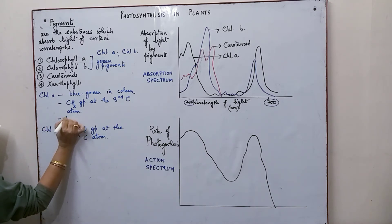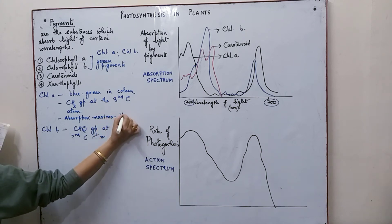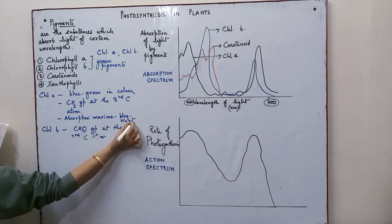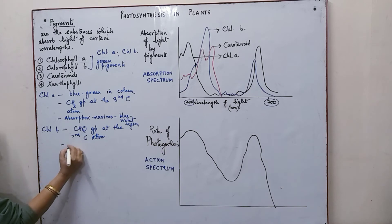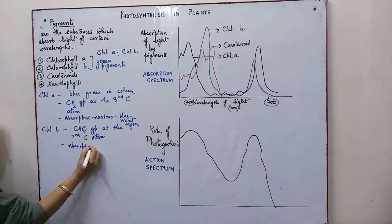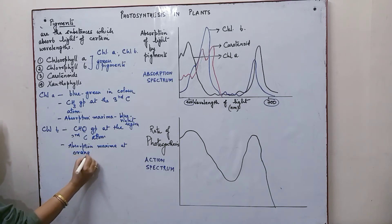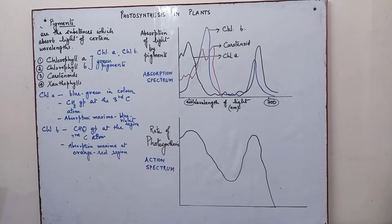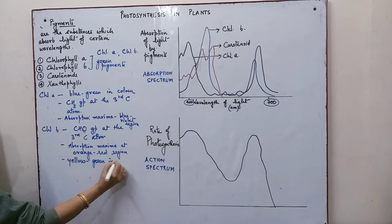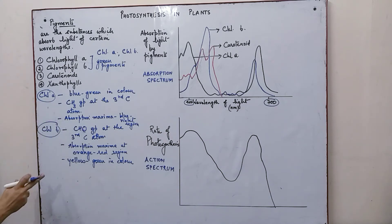Chlorophyll A shows absorption maxima in the blue-violet region, meaning that is where it absorbs most light. Chlorophyll B shows absorption maxima at the orange-red region. Chlorophyll B is yellow-green in color, in contrast to chlorophyll A which is blue-green.